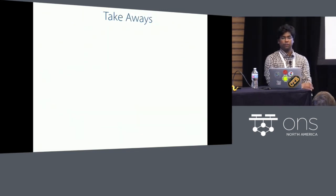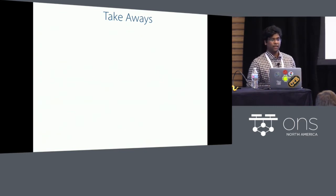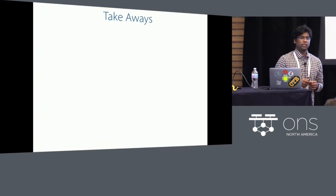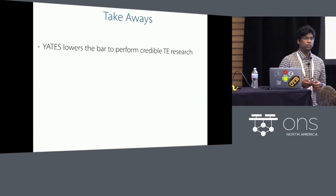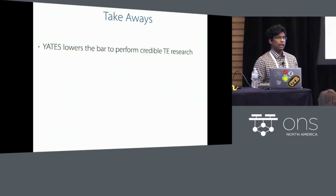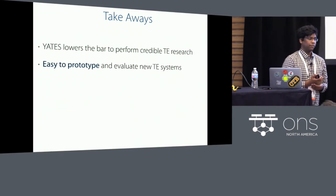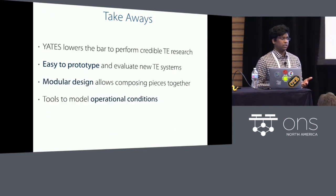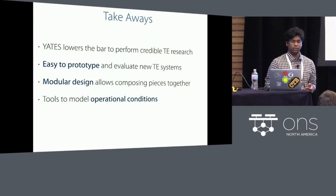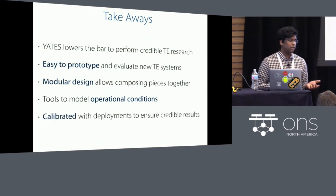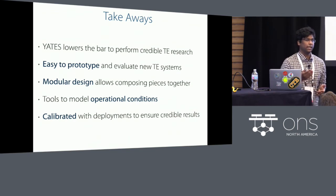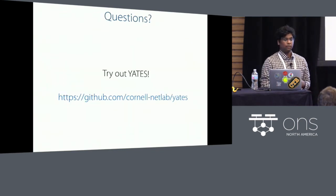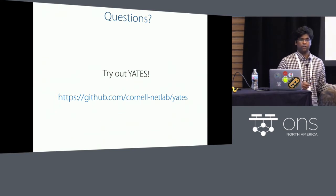To conclude, these are the main takeaways: it is incredibly hard to evaluate different traffic engineering systems on a level playing field, and Yates aims to lower the bar for credible research. It provides high-level and modular interfaces to implement a wide range of traffic engineering systems and compare them fairly. Yates also provides libraries to model different network scenarios. Finally, we have calibrated our simulator with hardware deployments to ensure the results from the Yates simulator match those seen in production. All the code for Yates is open source — feel free to check it out at the provided link.